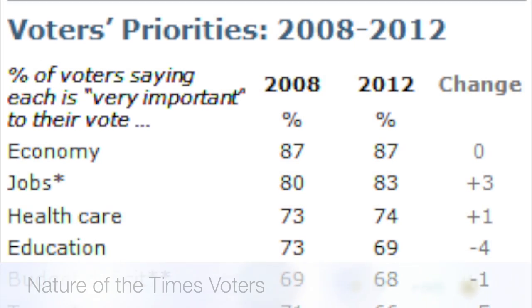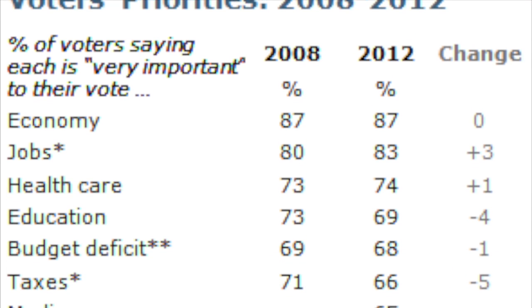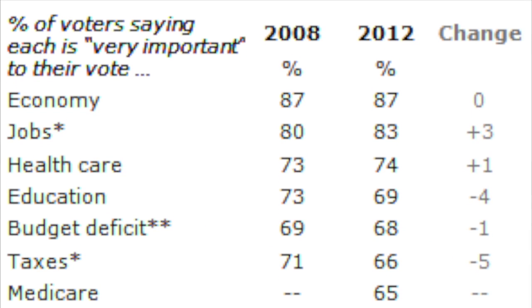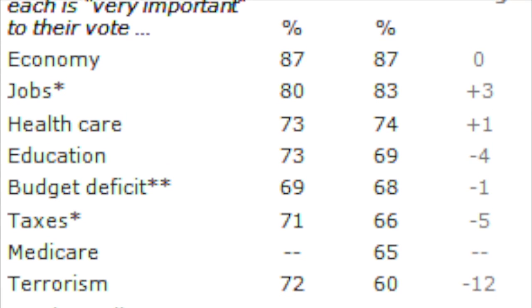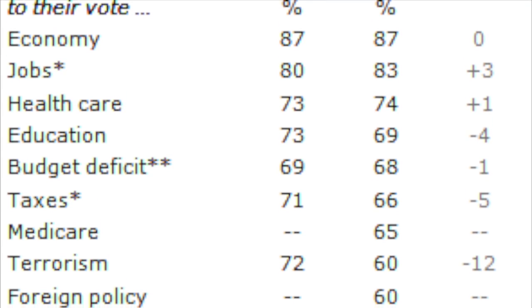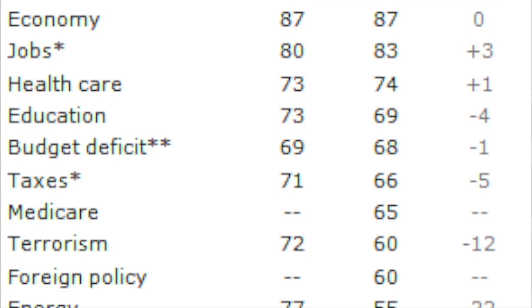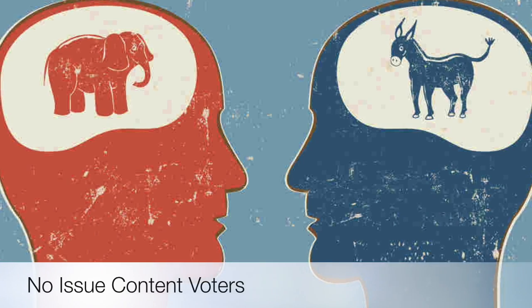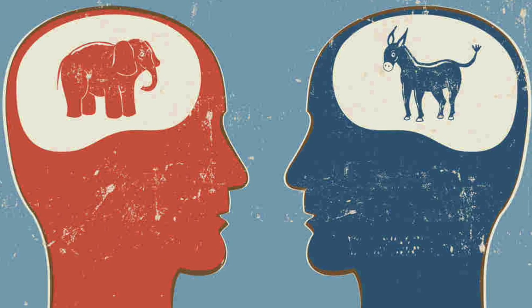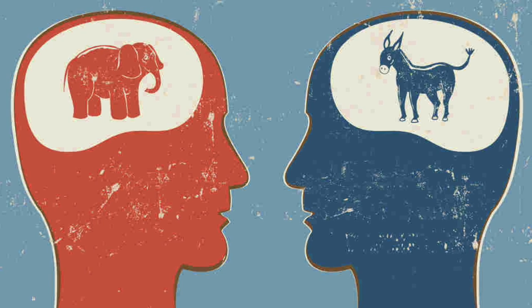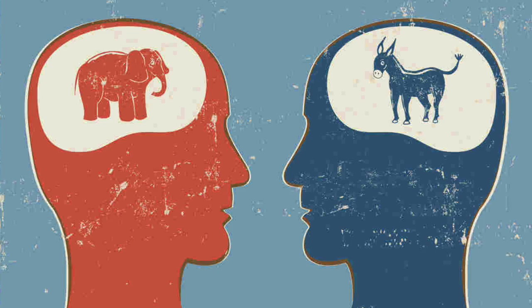Number three, nature of the times voters. These people tended to vote based on the current situation, which usually meant the state of the economy. In good economic times they voted for incumbents; in bad economic times they voted for challengers. And finally, group four, the no-issue content voters. These people either consistently voted for one party or voted based on candidate personalities.